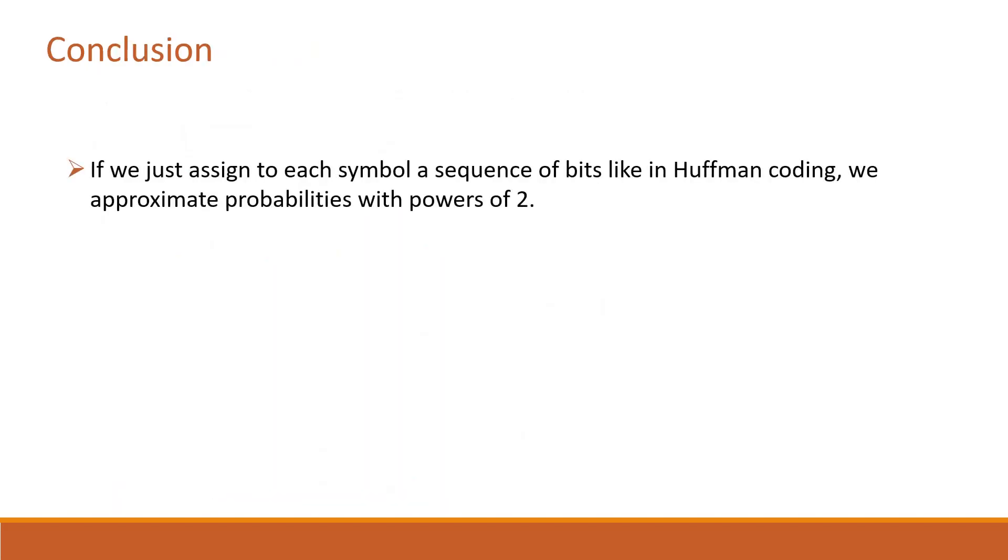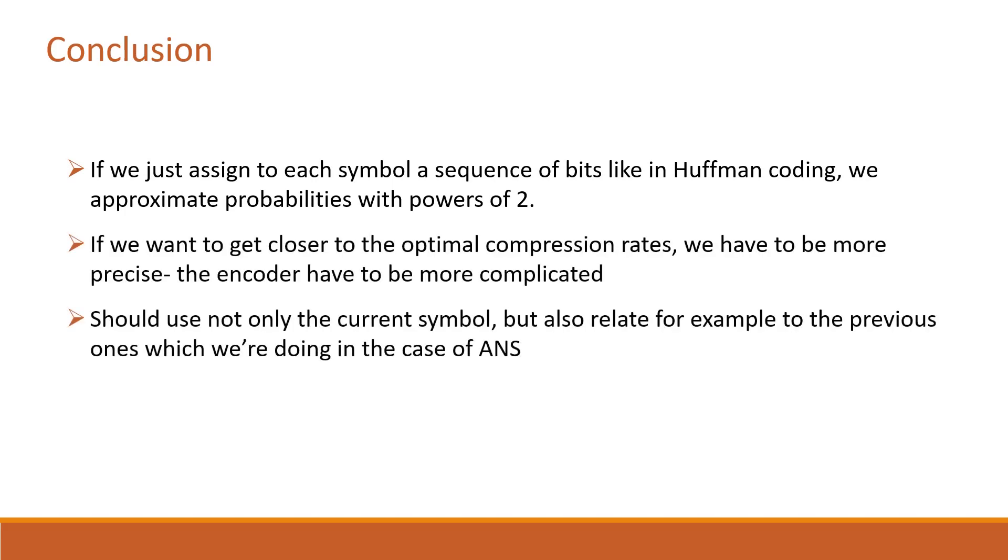In Huffman coding, we approximate probabilities to powers of half. To get closer to optimal compression rates, the encoder should not only use the current symbol but should also exploit information of previous symbols, which is being done in ANS.